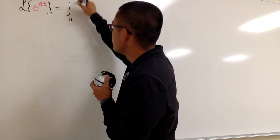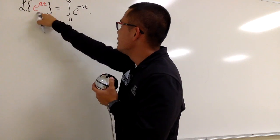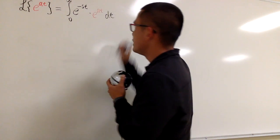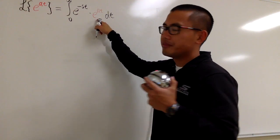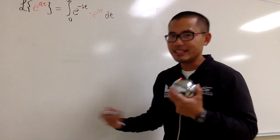So we will have the integral from 0 to infinity, e to the negative st, and we multiply by this, which is e to the at, and of course we have the dt. Now, if you look at this, both of them have e as the base. We can just combine the powers first and integrate.